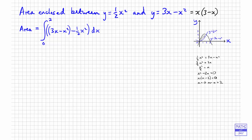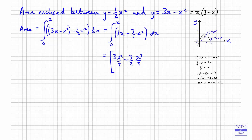So now we just simplify the integrand. We have 3x staying the same, and subtracting half x-squared from negative x-squared gives us negative 3 over 2 x-squared. Integrating 3x gives x-squared over 2, and integrating x-squared gives x-cubed over 3. We can take a half outside, giving us 3x-squared minus x-cubed, with the 3s cancelling. The limits are 2 and 0.